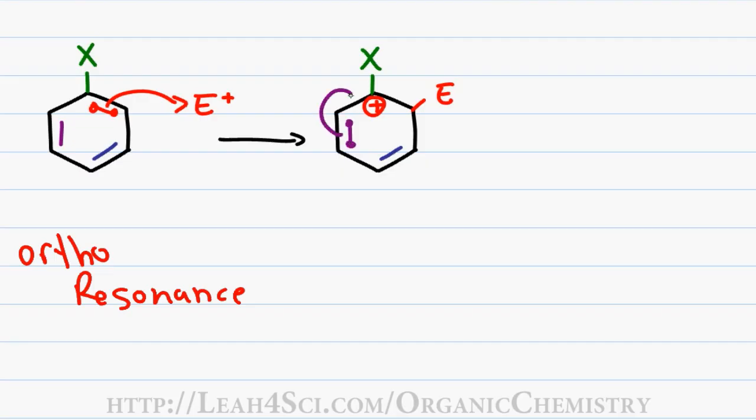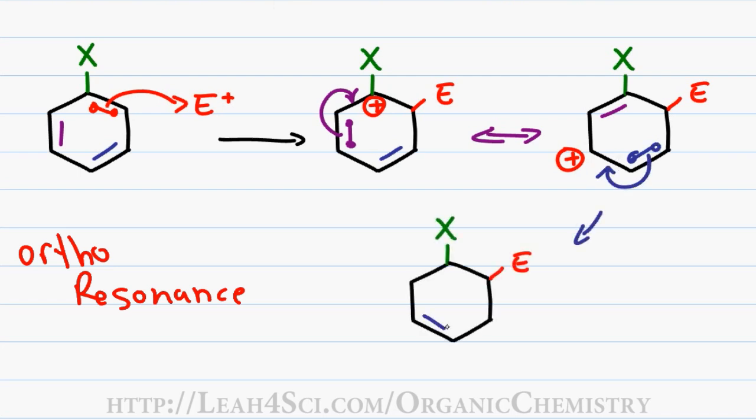The purple electrons are attracted towards that positive carbon and will resonate over. This gives me the first resonance structure where the blue pi bond remains where it is, the purple moved over and so did the positive charge. And finally, the blue electrons will attack the positive carbon shifting these electrons over one position resulting in my third and final resonance structure. And so I have my three resonance structures for an ortho addition.